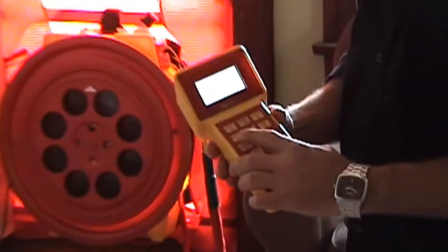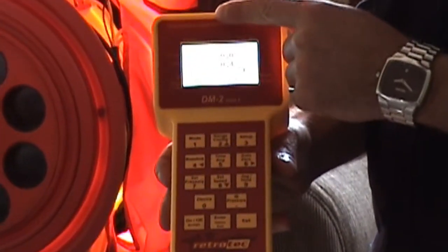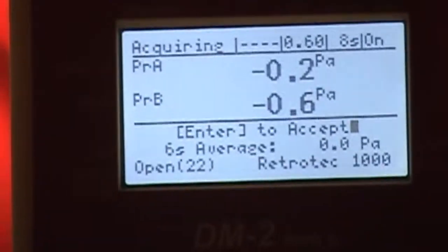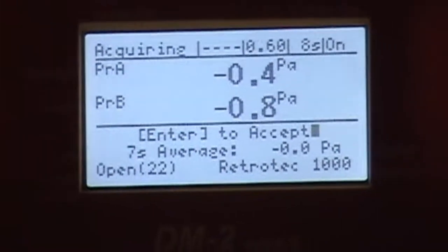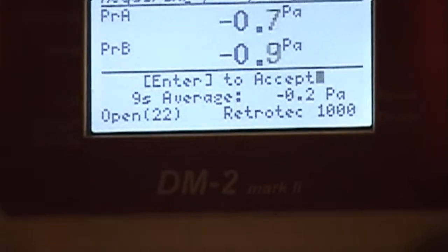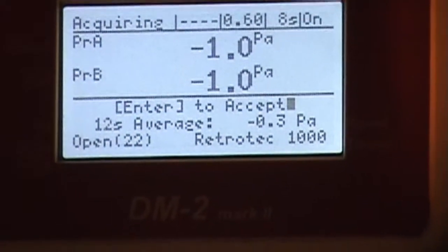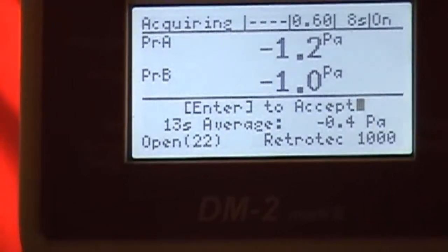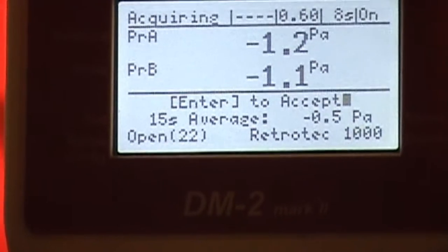So when you press the baseline feature you'll see that it says acquiring in the top corner. As we're acquiring over these 30 seconds it's averaging out that pressure reading so it can be subtracted from the new readings that we're going to find.